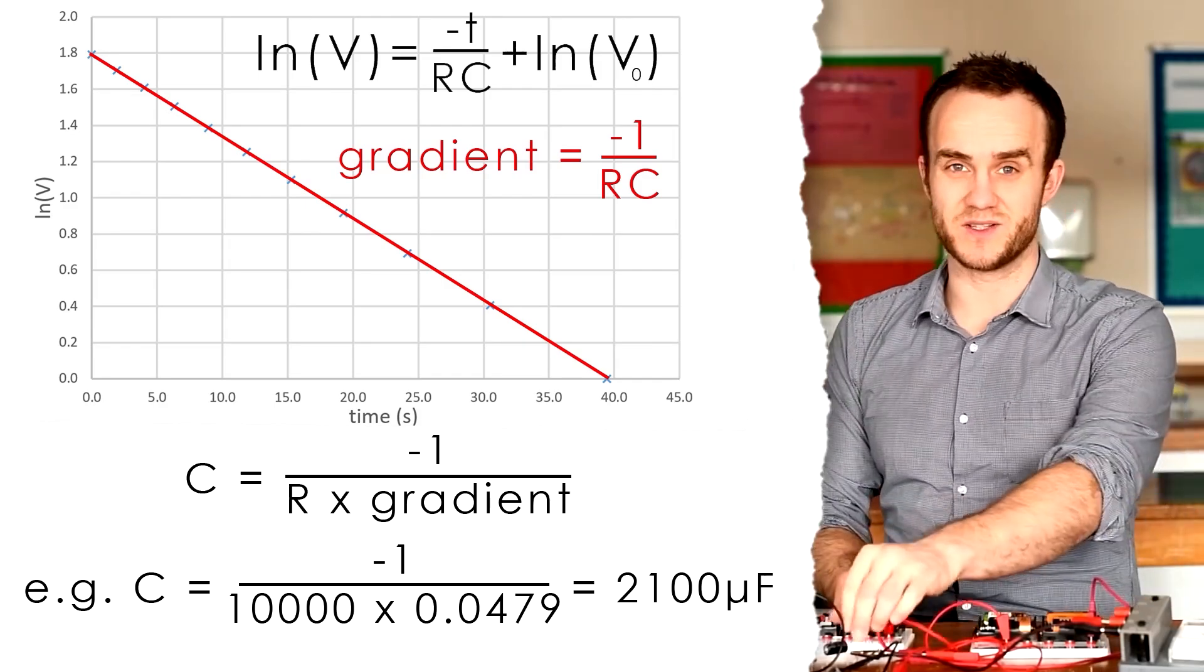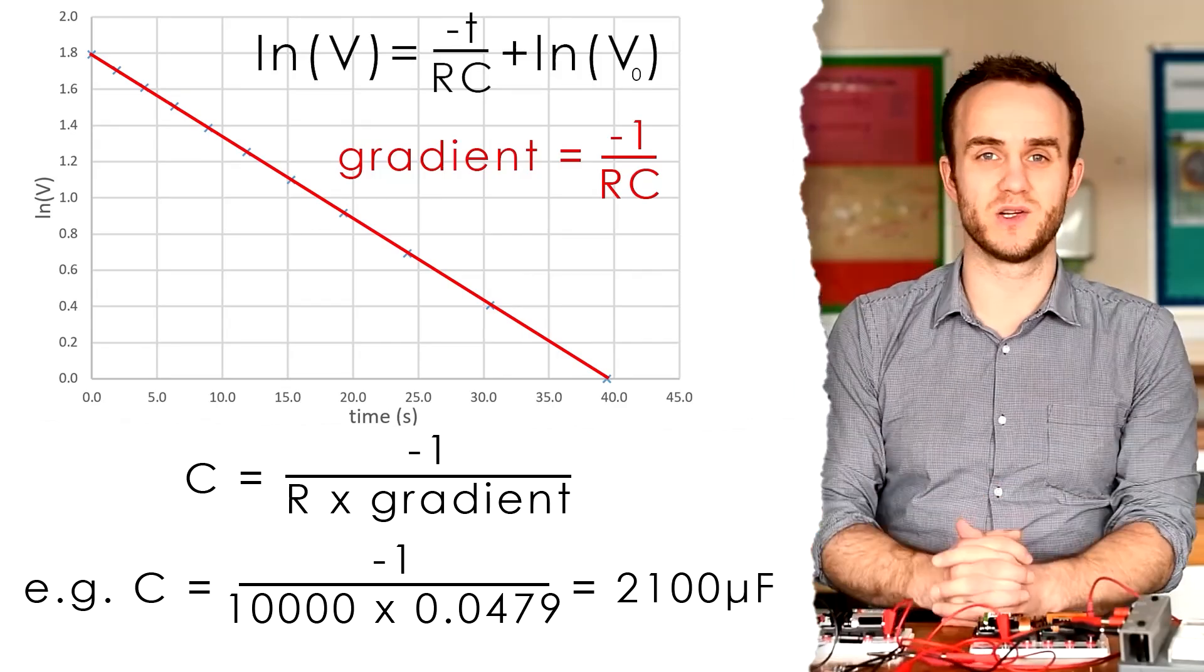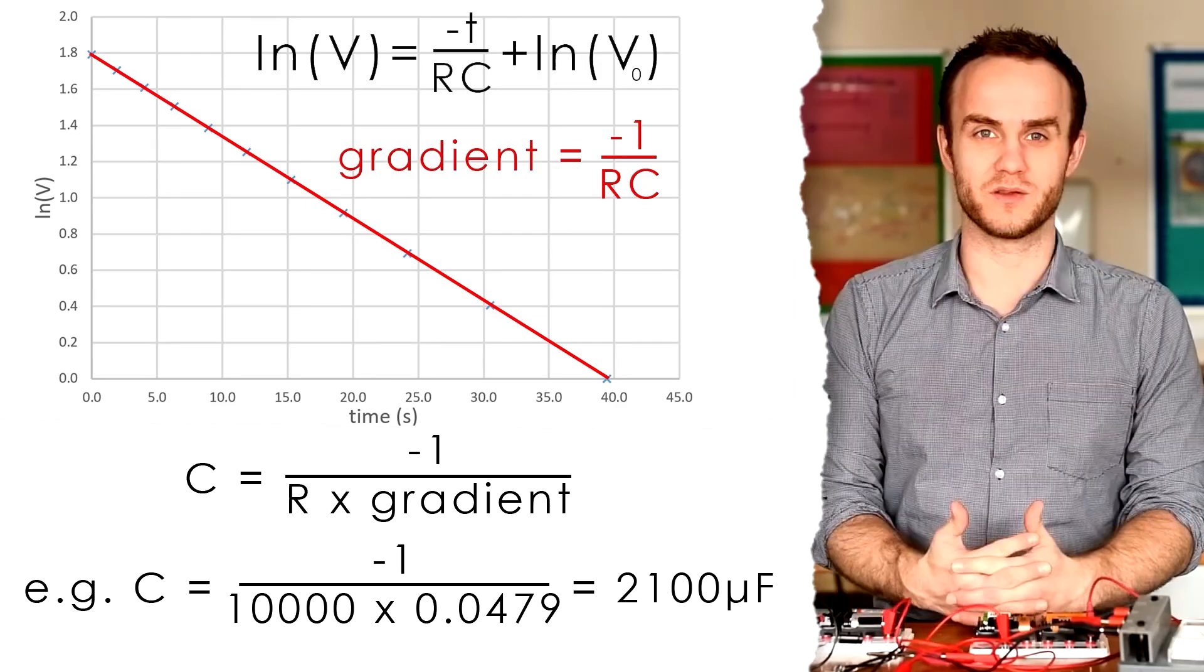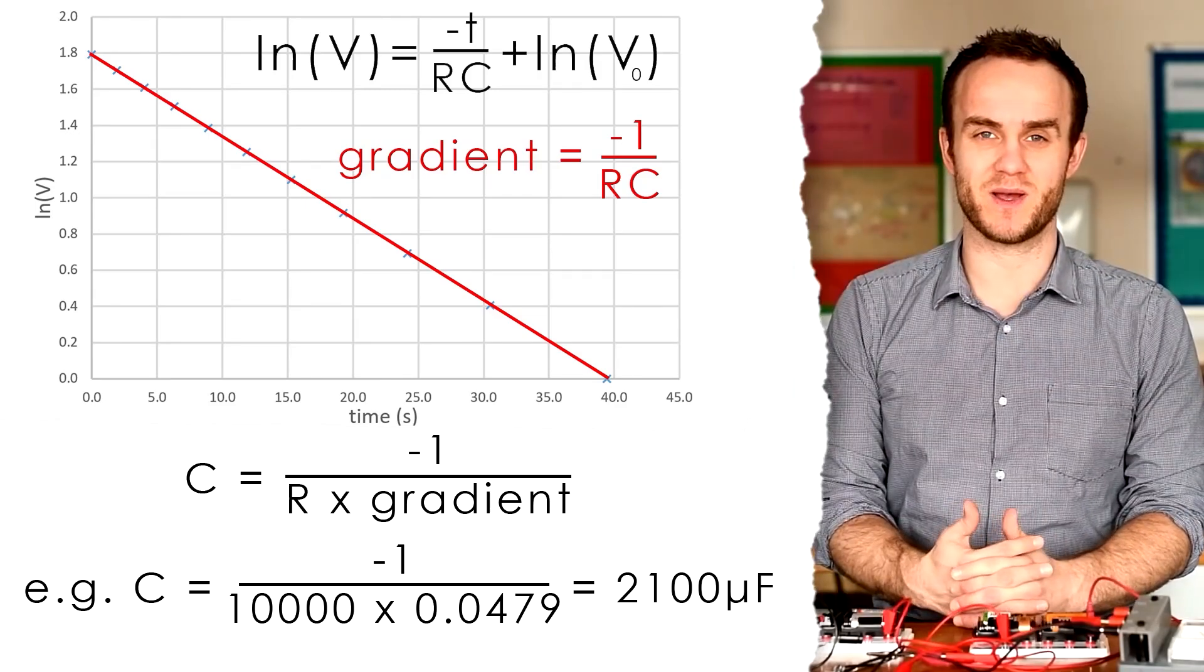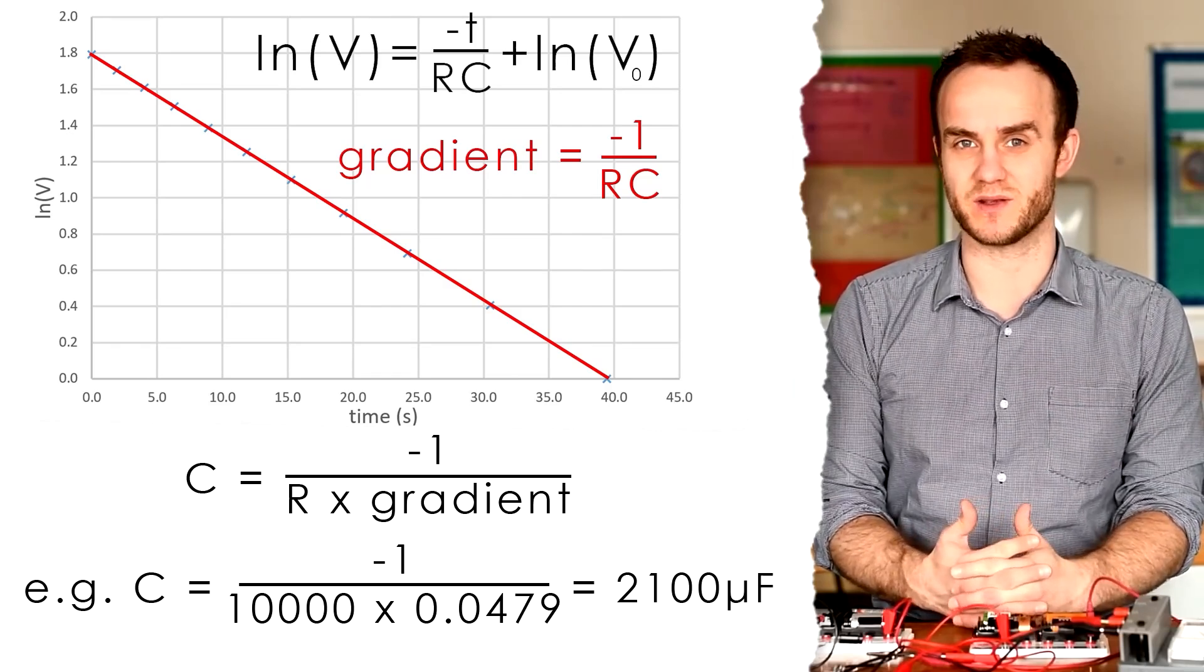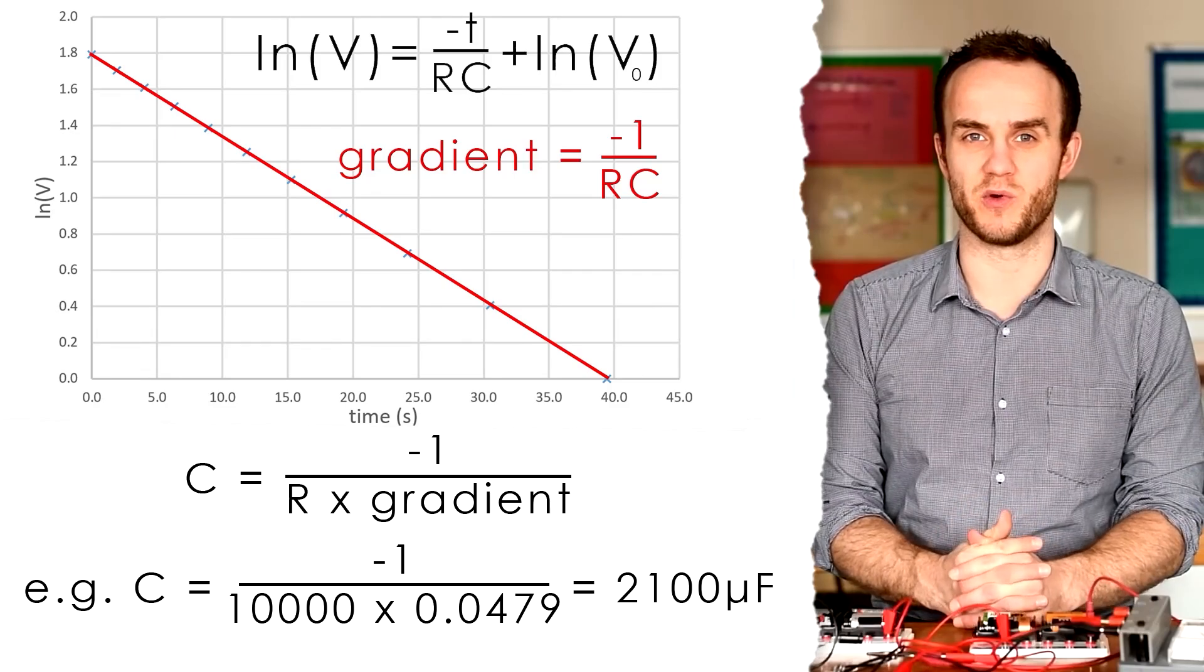Now in fact, I do know the capacitance because it's written on it, and it says 2,200 microfarads. So I was 100 microfarads out. That's not bad. I could then, of course, find the percentage error in my capacitance by finding the difference, 100 divided by the actual value, 2,200 times by 100. That gives me a percentage error of 4.8%.